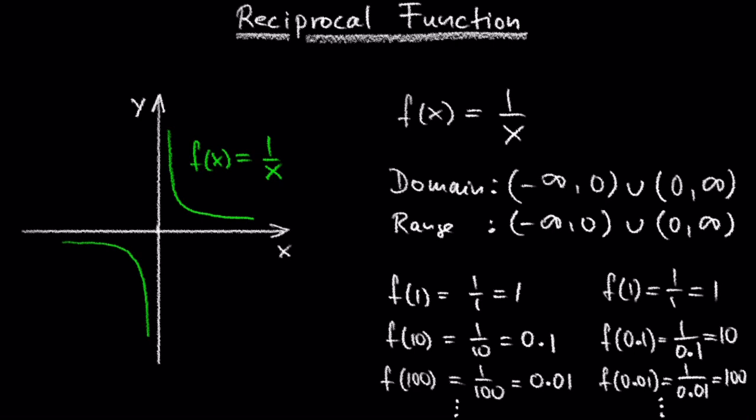The closer x gets to 0, the bigger the output gets. But it also will never reach it. We are approaching a vertical asymptote here, which is the y-axis.